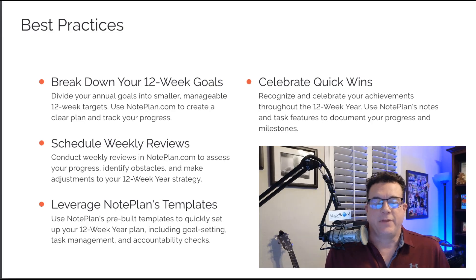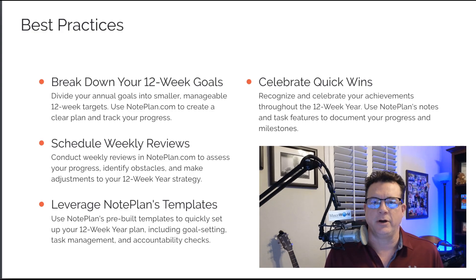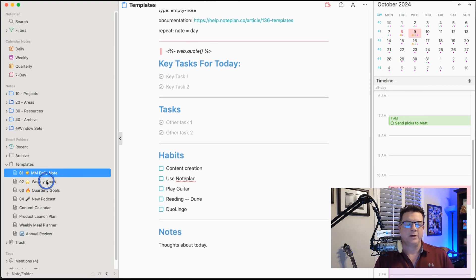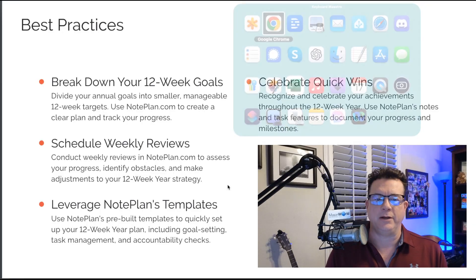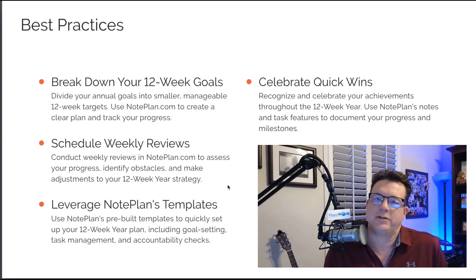That's the big idea of combining NotePlan with the 12-week year methodology. Some best practices: make sure you're breaking down your 12-week goals just as described in the system. Do your weekly reviews every week so you're clear on the key big rocks you need to place in your bucket each week to hit your goal. Leverage templates in NotePlan — all my daily and weekly notes have the same format because of NotePlan's templating feature, which is super powerful so you're not redoing the same setup repeatedly. And be sure to celebrate your wins — each day when you check things off, and especially at the end of the week when you reach your goals, celebrate that. NotePlan gives you a nice record of all your accomplishments so you can feel good about the progress you're making.